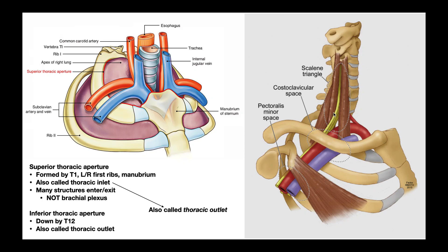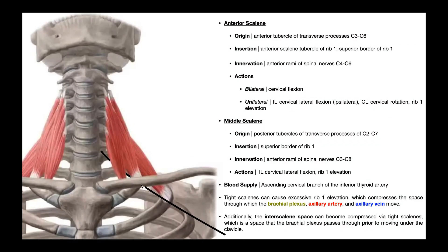These three spaces all play a role in TOS. The brachial plexus moves between the anterior and middle scalenes through the interscalene space, passes through the costoclavicular space (under the clavicle and above the first rib), and then into the pectoralis minor space and through the axilla. The anterior and middle scalenes actually insert on the first rib, and one of their common actions is to elevate the first rib — for example, during active inhalation when you raise the rib cage so the lungs can expand.